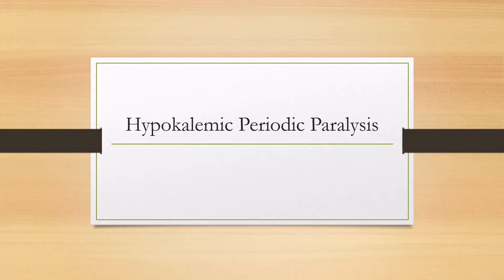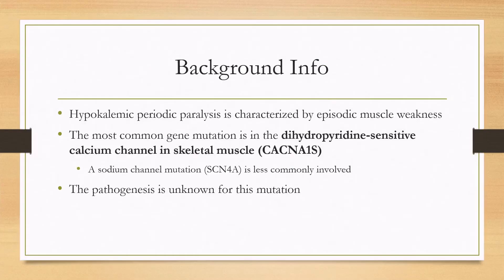Let's talk about hypokalemic periodic paralysis. Hypokalemic periodic paralysis is characterized by episodic muscle weakness. The most common gene mutation is in the dihydropyridine-sensitive calcium channel in skeletal muscle. Less commonly, the sodium channel (SCN4A) can be affected. The pathogenesis for why this calcium channel mutation causes hypokalemic periodic paralysis is unknown.